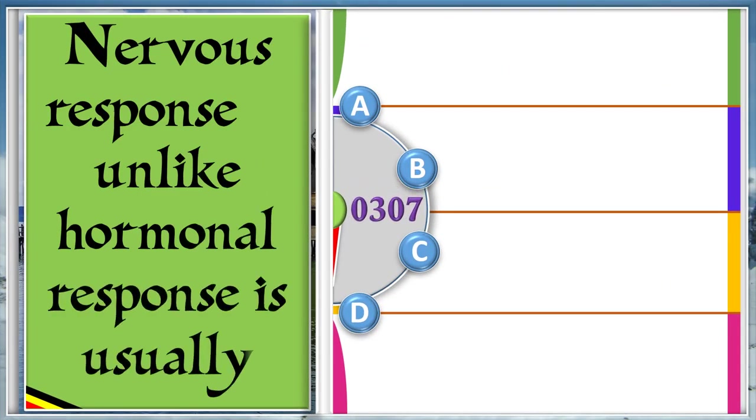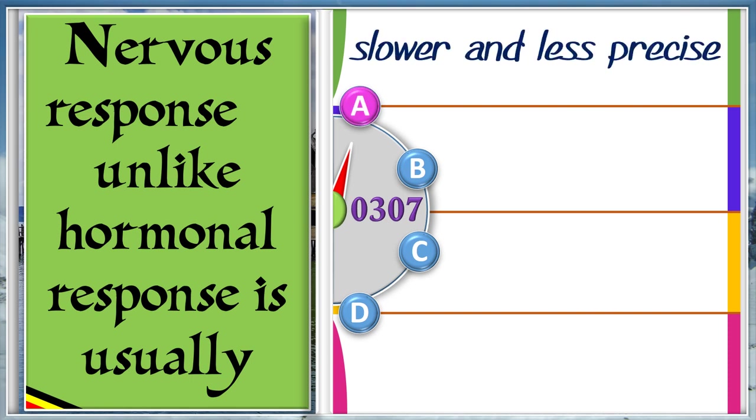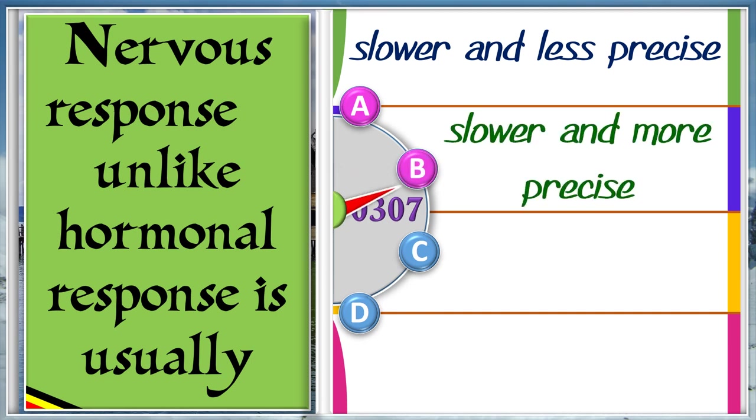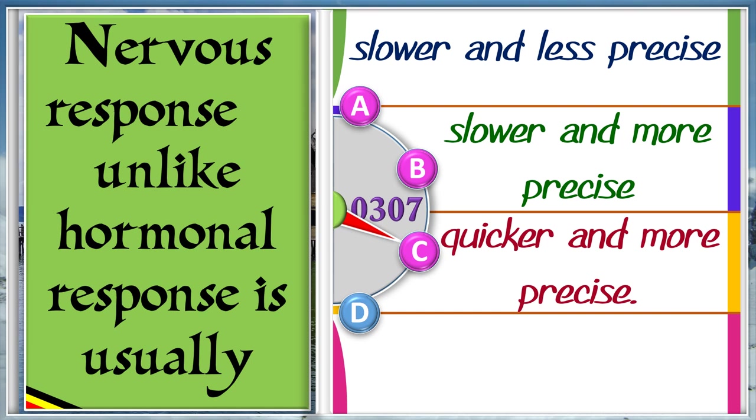Nervous response, unlike hormonal response, is usually A: Slower and less precise. B: Slower and more precise. C: Quicker and more precise. D: Quicker and less precise. The answer is C.